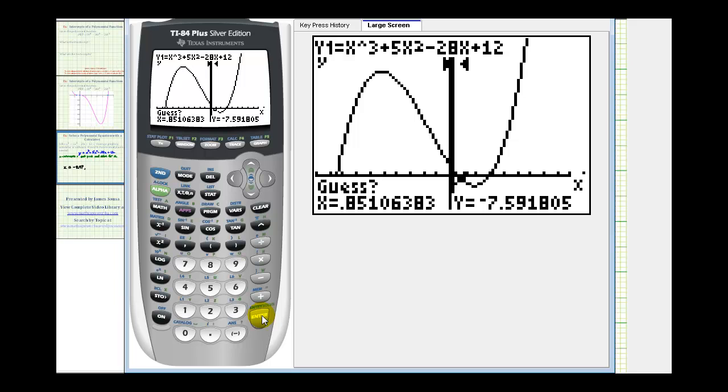Press enter and then enter one more time. This x-intercept is approximately 0.47, which would be our next approximate solution.